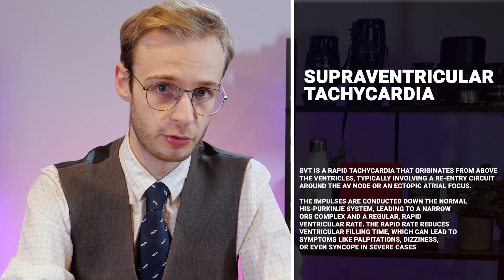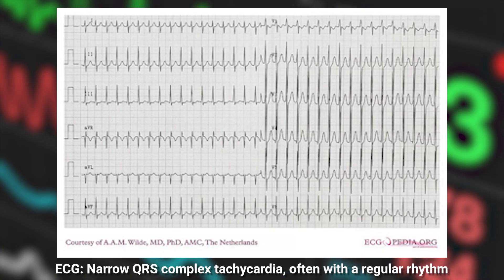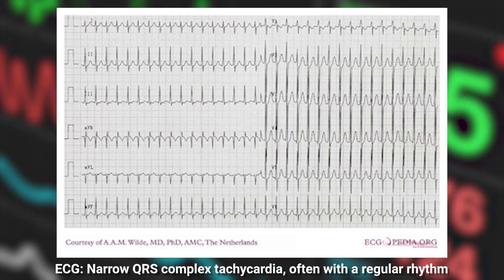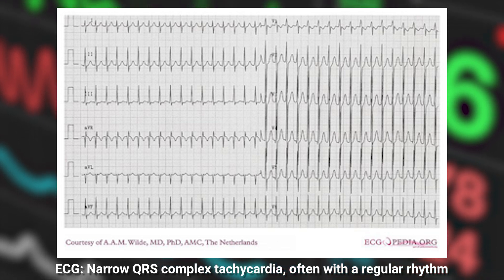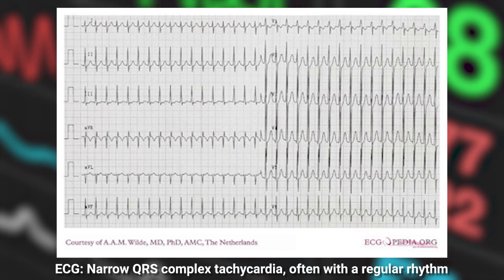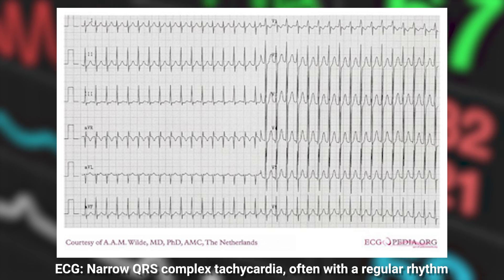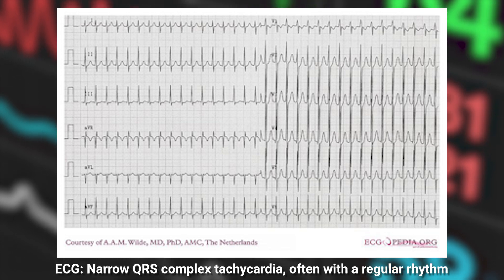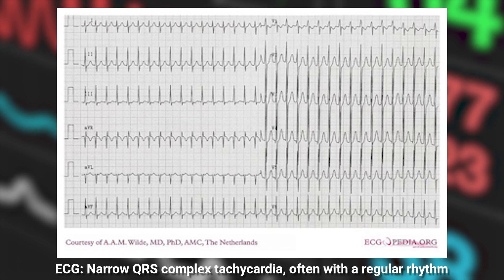Number three: supraventricular tachycardia. It's a rapid tachycardia originating above the ventricles, typically involving a re-entrant circuit around the AV node or some ectopic atrial focus. Impulses are conducted down a normal His-Purkinje system, leading to a narrow QRS complex and regular ventricular contraction. Because the rate is so fast, the ventricles have less time to fill, decreasing cardiac output and causing classic symptoms like dizziness, palpitations, or syncope. On the ECG, we see a narrow complex tachycardia with a regular ventricular rate.